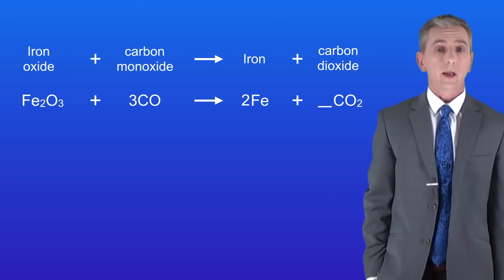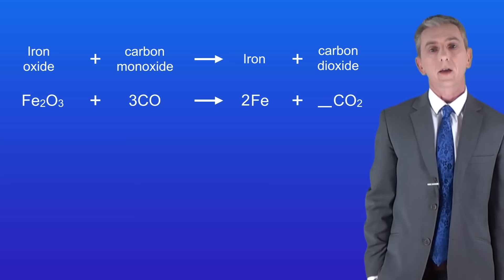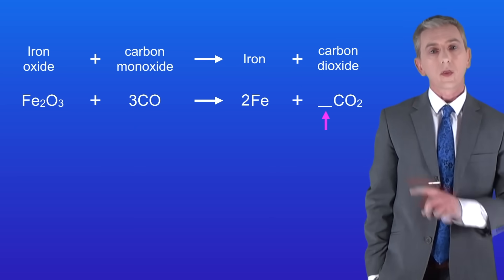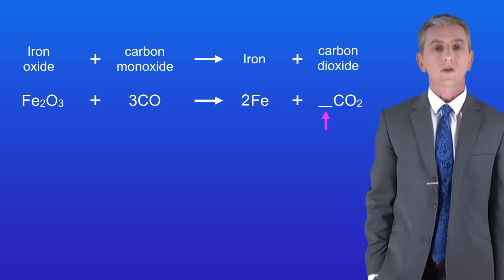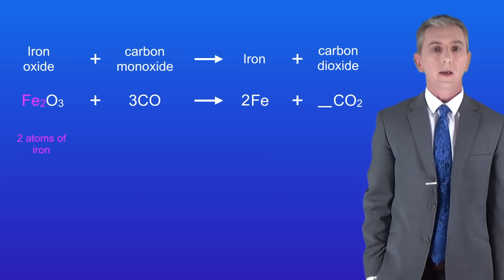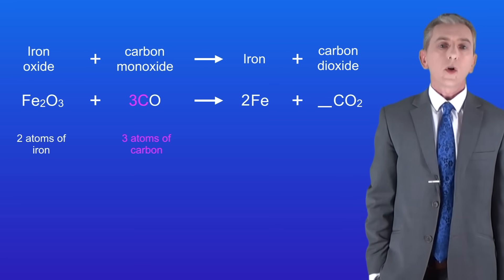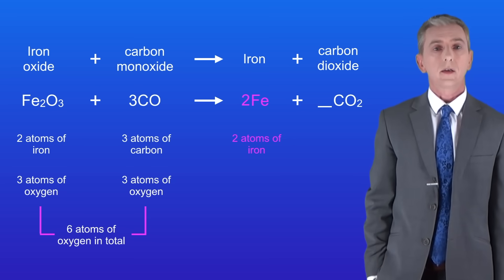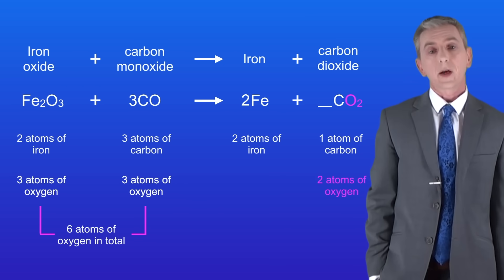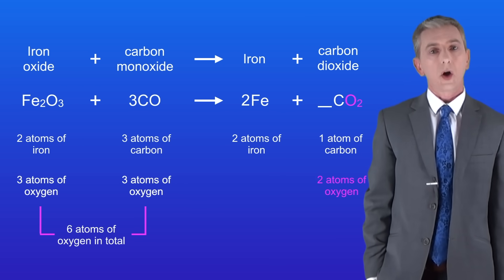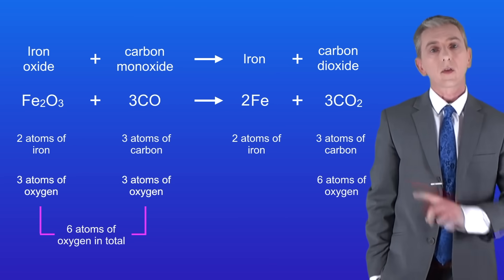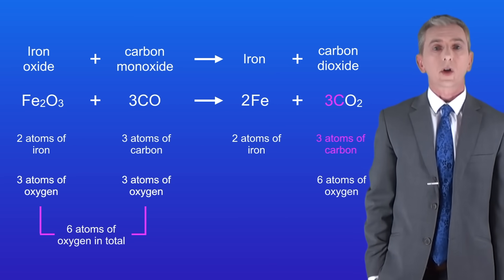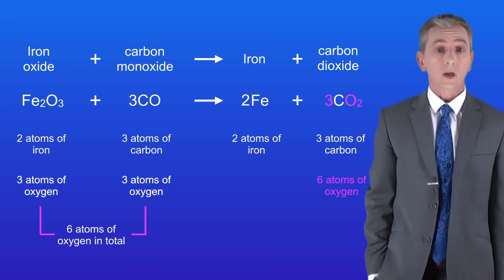Here's a final example: iron oxide reacting with carbon monoxide producing iron and carbon dioxide. Balance the equation by inserting a large number in the space provided. On the left hand side we've got two atoms of iron, three atoms of carbon, and six atoms of oxygen in total. On the right hand side we've got two atoms of iron, one atom of carbon and two atoms of oxygen. We need two more atoms of carbon and four more atoms of oxygen on the right hand side, and we can get that by adding a large three in the space. Now we have three atoms of carbon and six atoms of oxygen on the right, so the equation is balanced.